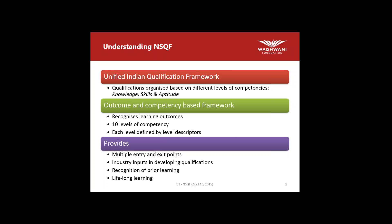Whereas in the competency-based framework, the time is flexible whereas the mastery of the learning outcomes is fixed. Everyone who qualifies on the competency-based framework is supposed to know each and every element, but they may learn it in a flexible time mode. Someone could pick it up in 50 hours; the same thing someone may take 100 hours to do. This whole framework is based on learning outcomes. There are 10 different levels of competency which have been defined in the framework.